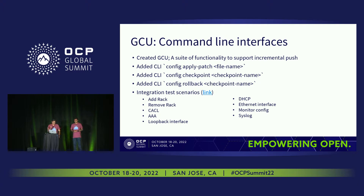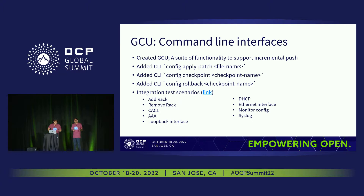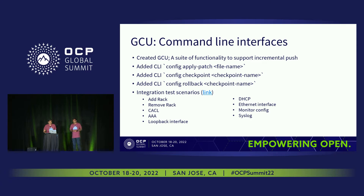These are the command line options for GCU. It has three options basically: 'config apply-patch' to apply the file, where the file is a JSON patch — a set of instructions in JSON patch format. The next is 'config checkpoint', where we save the config DB currently running on the system to a file with the checkpoint name the user specifies. And the third command is 'config rollback', so we can roll back to any stored checkpoint at any time.